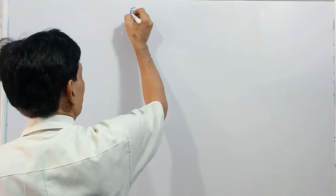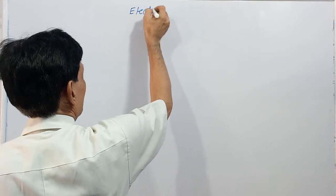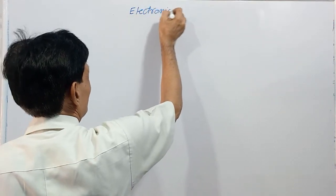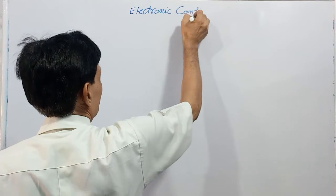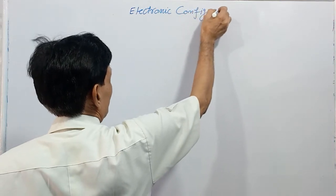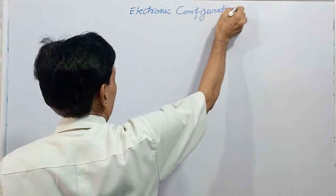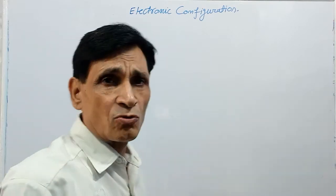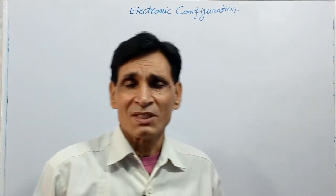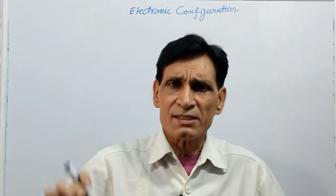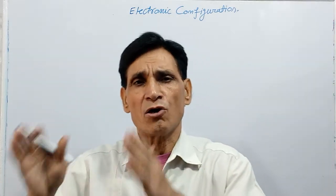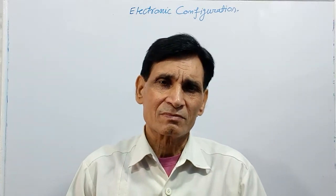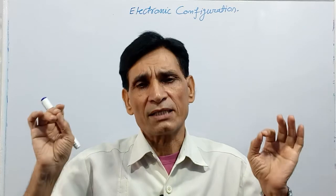Hello students. In this video you will find the electronic configuration of elements. What is electronic configuration? The distribution of electrons in various shells, orbits, or energy levels is called electronic configuration.